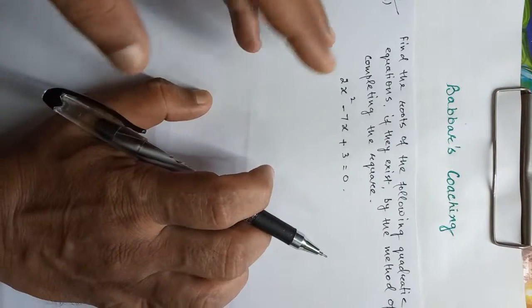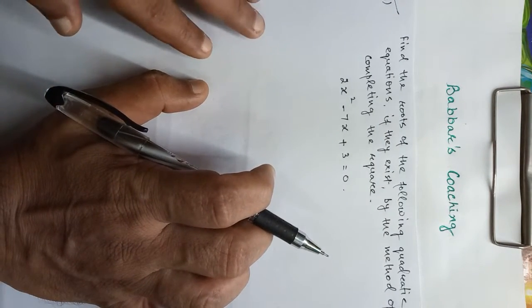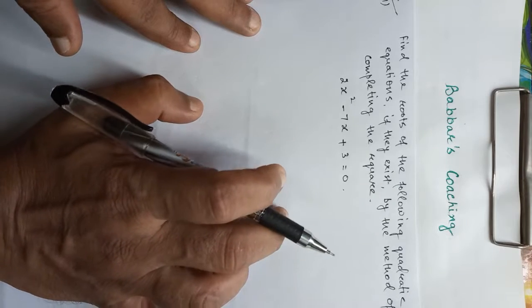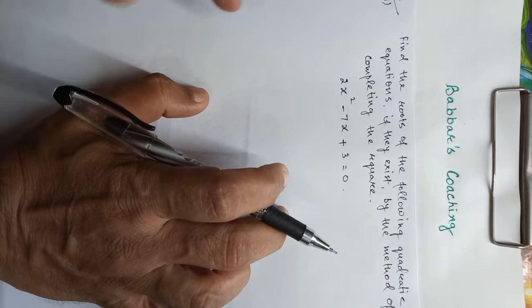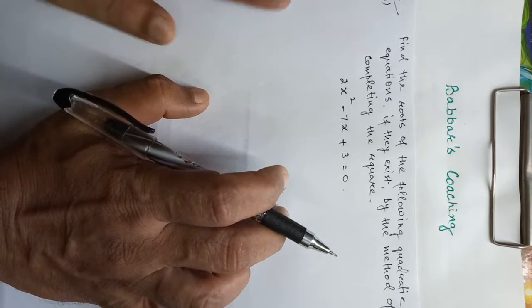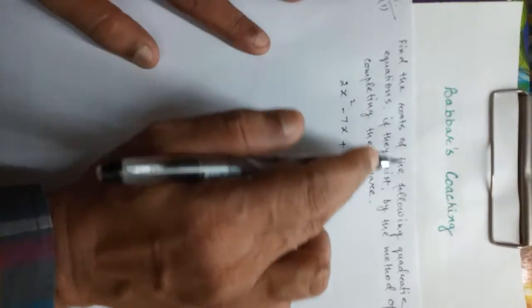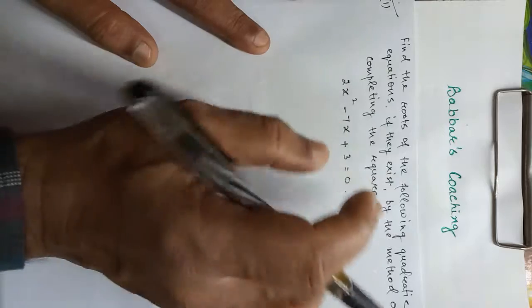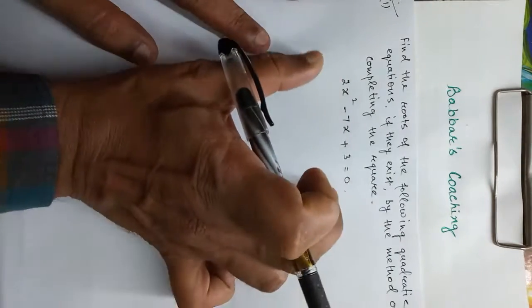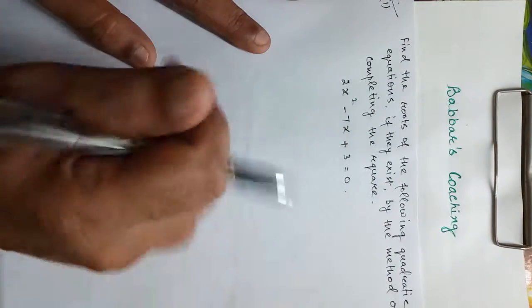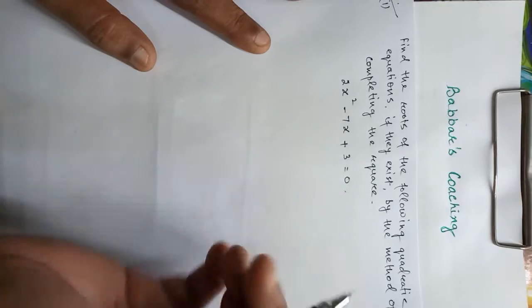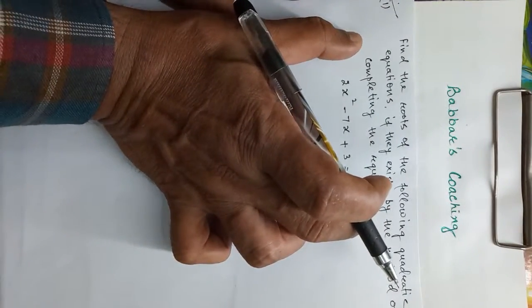Students, we had completed exercise 4.2 in our previous video and now we will start exercise 4.3 in this video. We will discuss question number one. It says: find the roots of the following quadratic equations, if they exist, by the method of completing the square. We have been given some quadratic equations and we have to find the roots by the completing the square method.